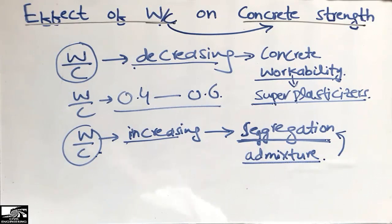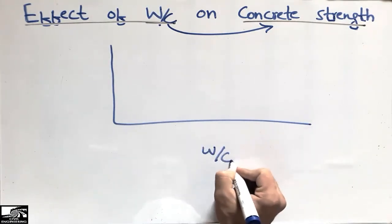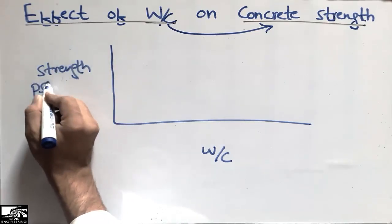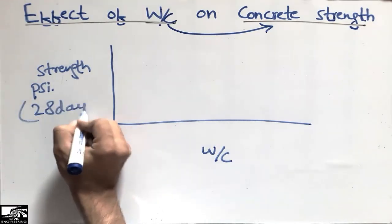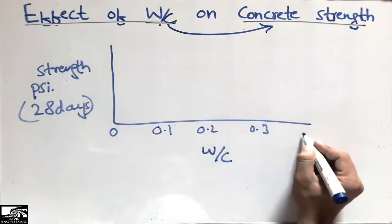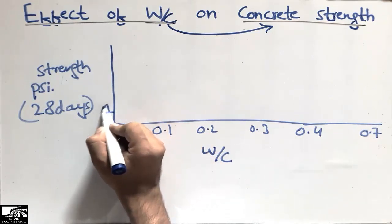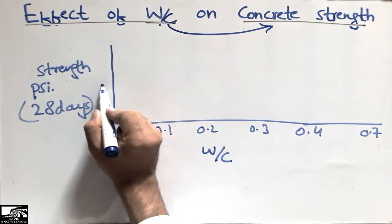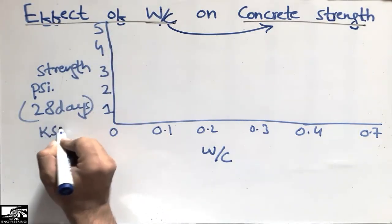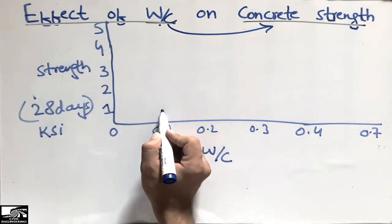Now I will show this by a graph. On the x-axis is the water-cement ratio, with values at 0.1, 0.2, 0.3, 0.4, and 0.7. On the y-axis is the strength of the concrete after 28 days, in ksi — with values at 1 ksi, 2 ksi, 3 ksi, 4 ksi, and 5 ksi.